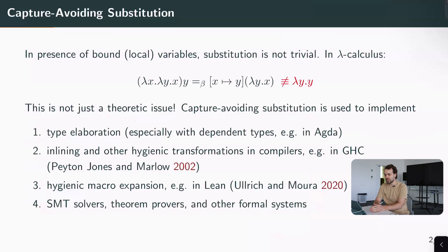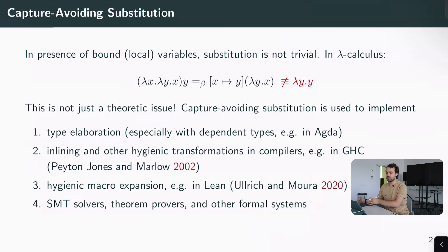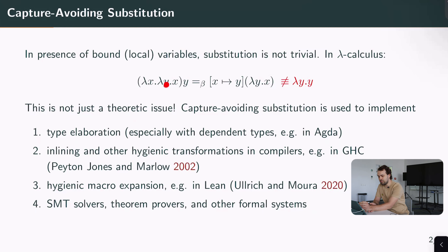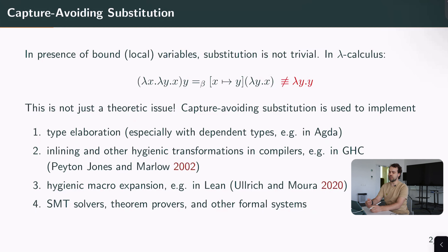A very simple example in lambda calculus would be a function of two arguments x and y which returns x, applied to some other variable y. This other variable y is different from the locally bound y. By the rules of lambda calculus, when we apply this function we replace x with y, but doing so naively is incorrect because we conflate the global y with the local y.